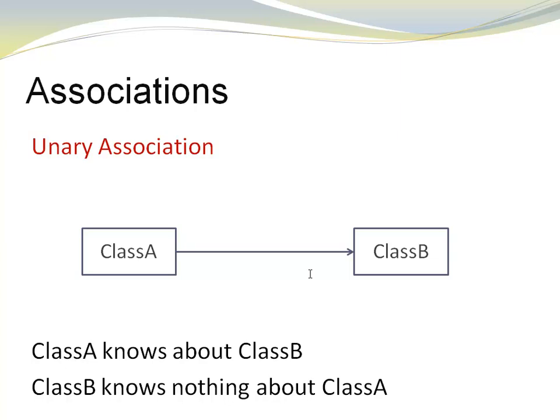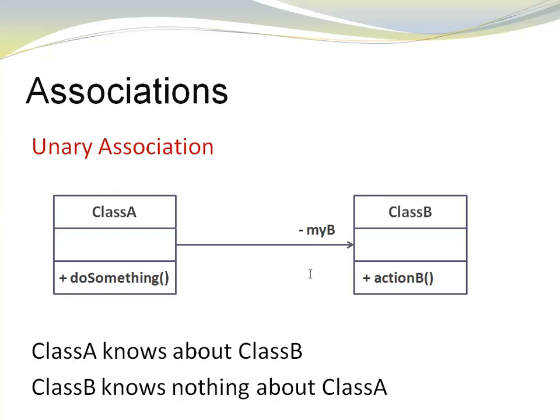So here we have again the more general view with class A and class B. Notice that our classes are represented by rectangles with the class name only. Many times in UML class diagrams, we want to show more detail. Here I have class A and I can see that class A has a method called do something. And class B has another method which is called action B.